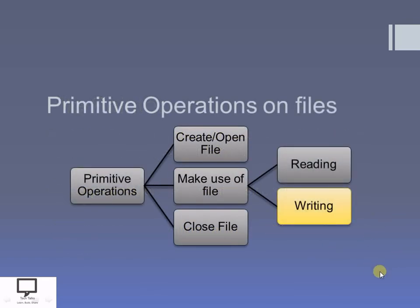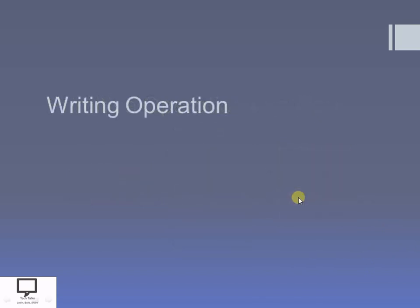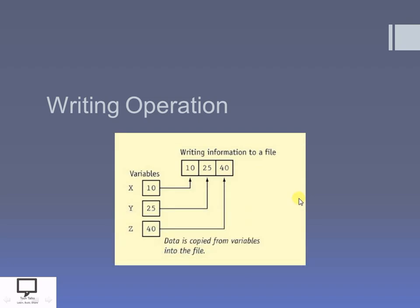Now let's start with the primitive operation: writing onto the file. I am explaining how to write information to a file with the help of an example. I have three variables with three separate values — variable x has value 10, variable y has value 25, and z has value 40. If I want to write this data onto the file, with the help of the file pointer I will copy the content of each variable into the file. The file pointer advances automatically after each variable is written. In this way, data is copied from the variables into the file — this is the write operation onto the file.